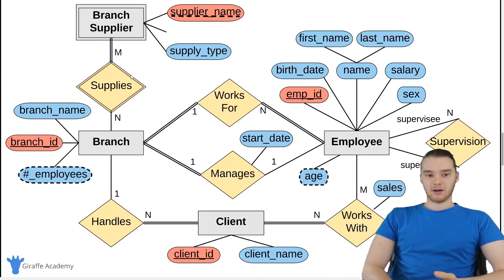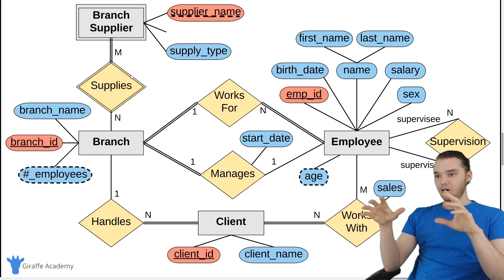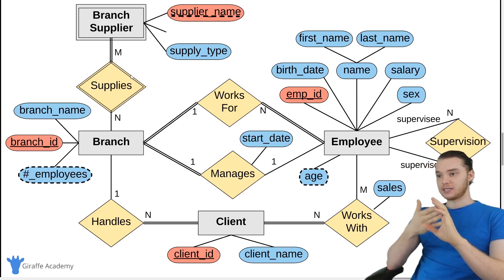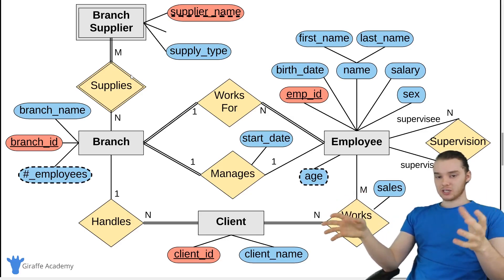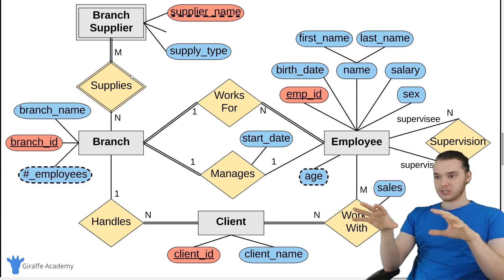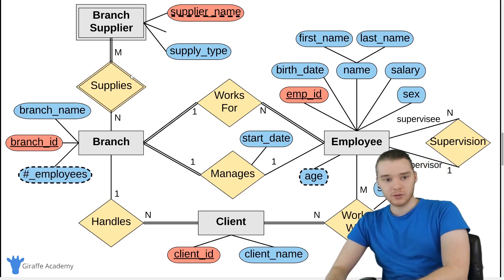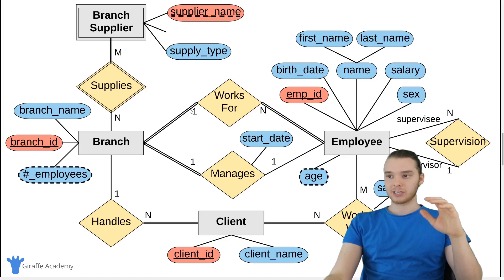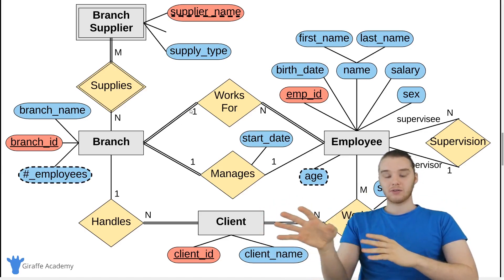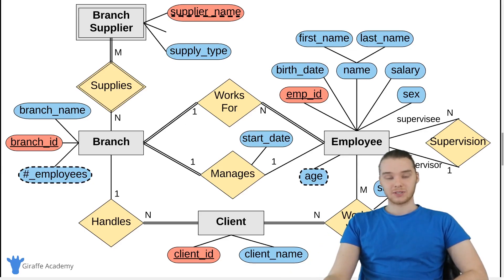So this is basically our entire ER diagram. From that requirements document, we've been able to map out all of the different entities, all the different attributes on the entities, and all the different relationships. This diagram visually represents all that information. What we can do now is take this ER diagram, and depending on the different relationships, the cardinality ratios, and the different participations, we can convert this into a database schema — which I'm going to show you guys how to do in the next video. So stick around and we'll design our database based off this ER diagram.